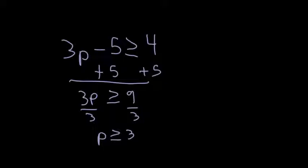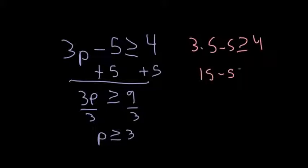Here I have the equal-to included, so I can use 3 itself — I don't have to use something greater, but I can. Let's use 5 to check. So 3 times 5 minus 5 is greater than or equal to 4. 3 times 5 is 15, minus 5 is greater than or equal to 4. 15 minus 5 is 10, and 10 is greater than or equal to 4 — that's a true statement.